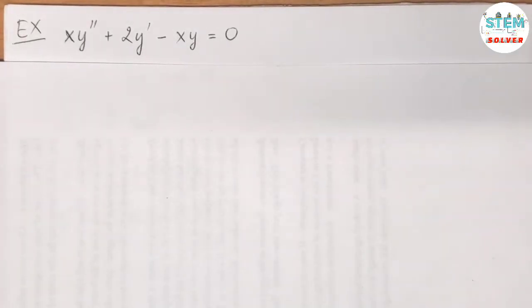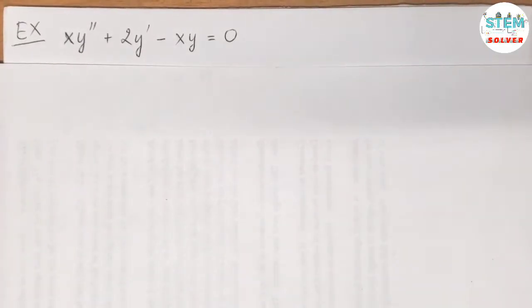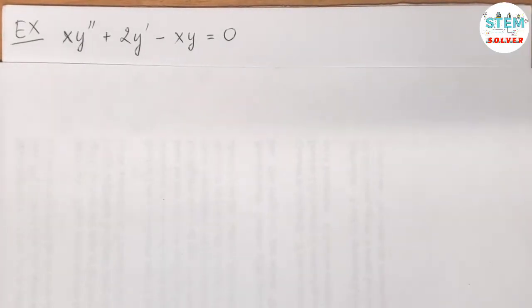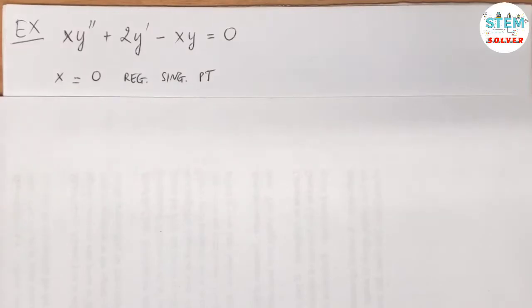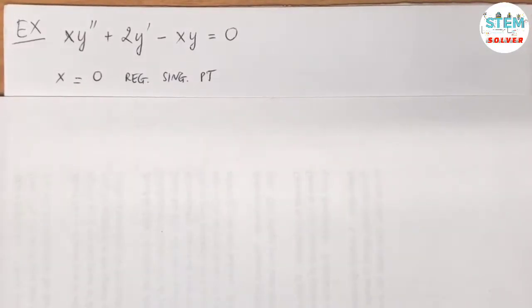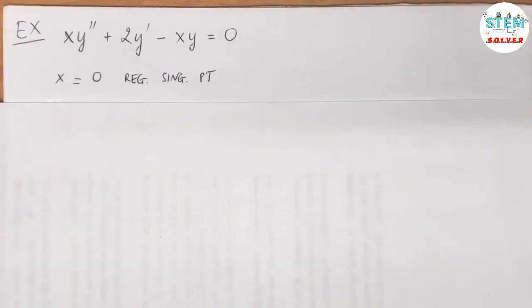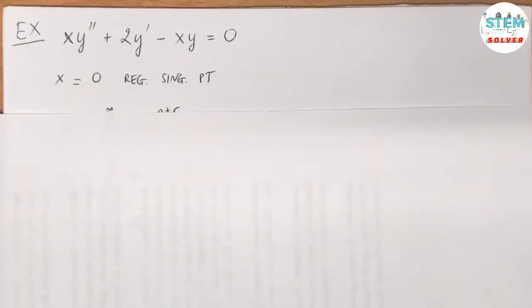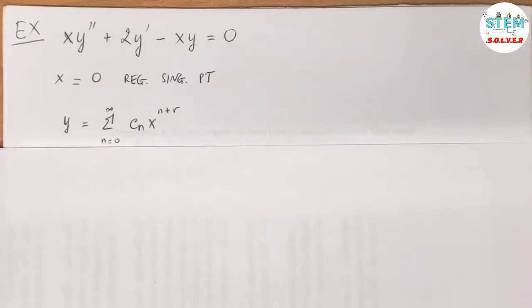Using power series to solve a homogeneous differential equation, where x equals 0 is given as a regular singular point. Our final solution is given in the standard Frobenius form.